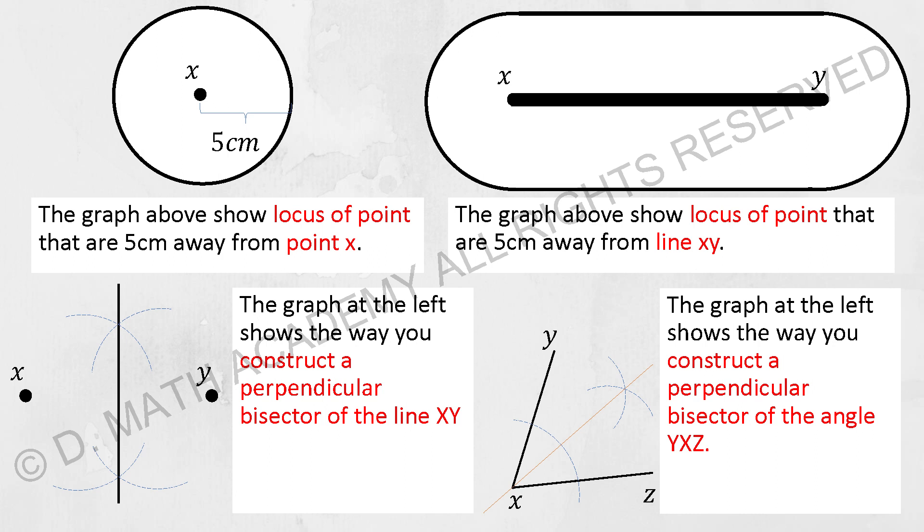After you draw out the circle itself, then you draw two lines at the top and the bottom of the circle, and then erase whatever there is inside. Then you will form this particular shape.